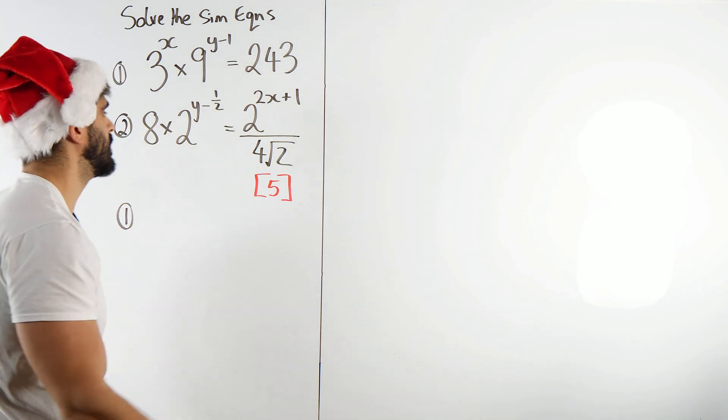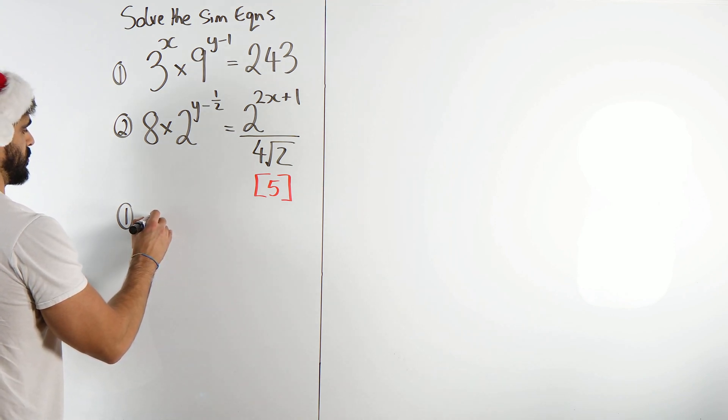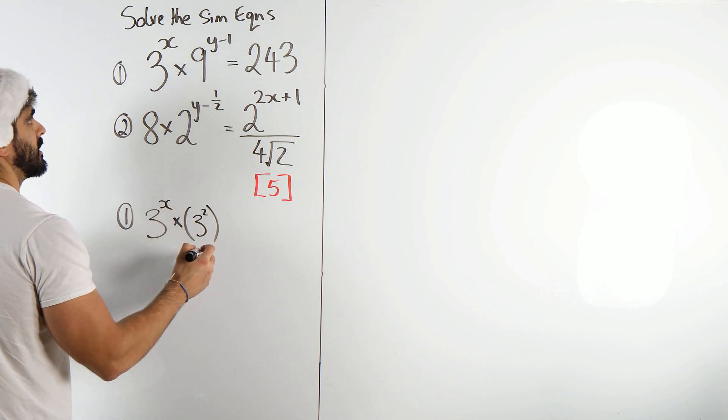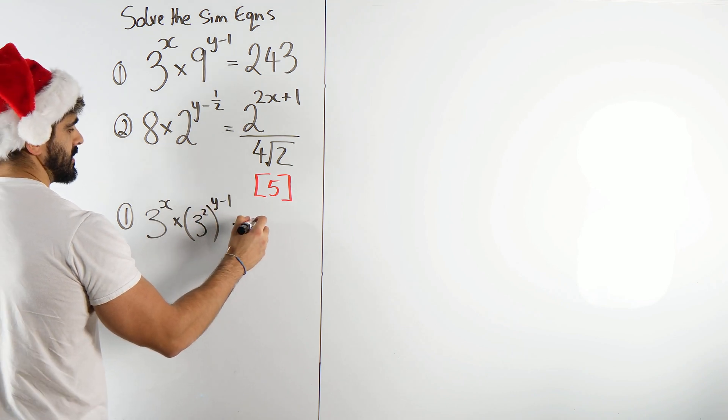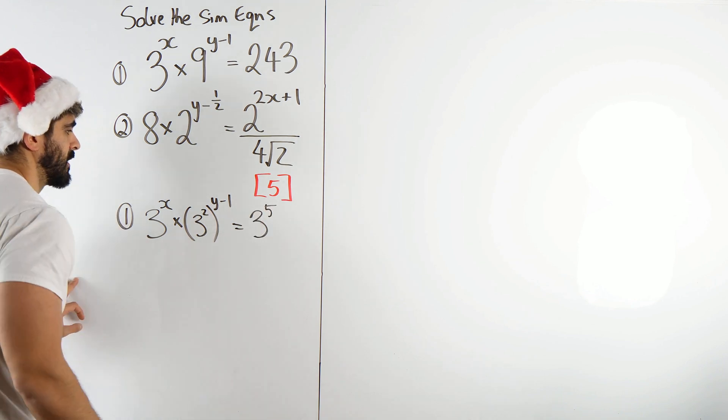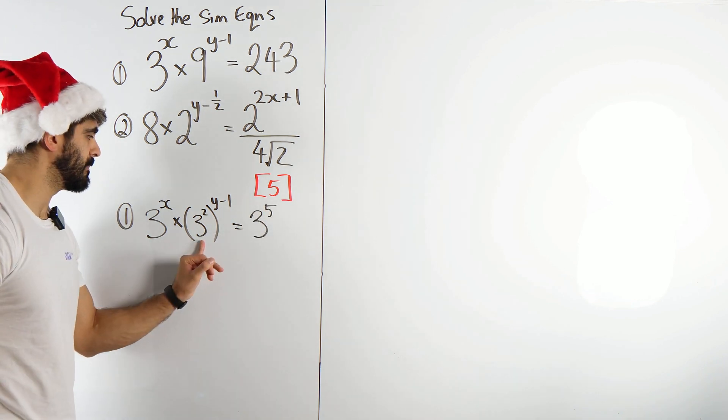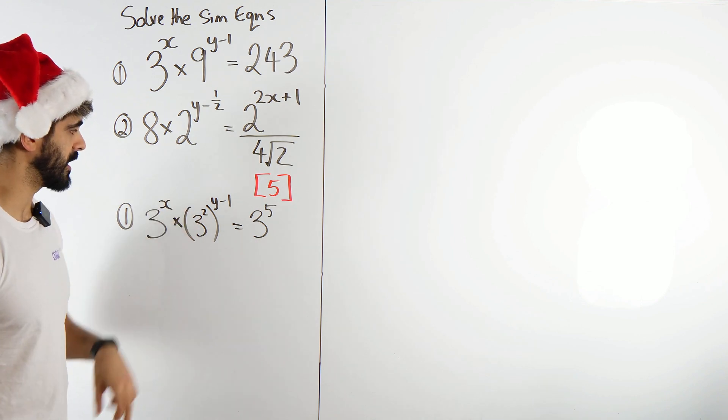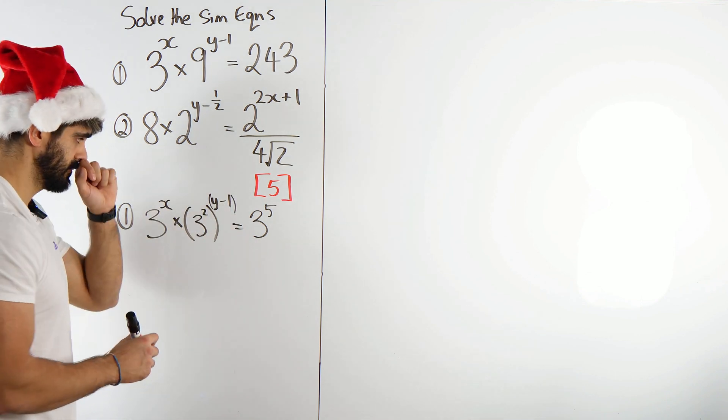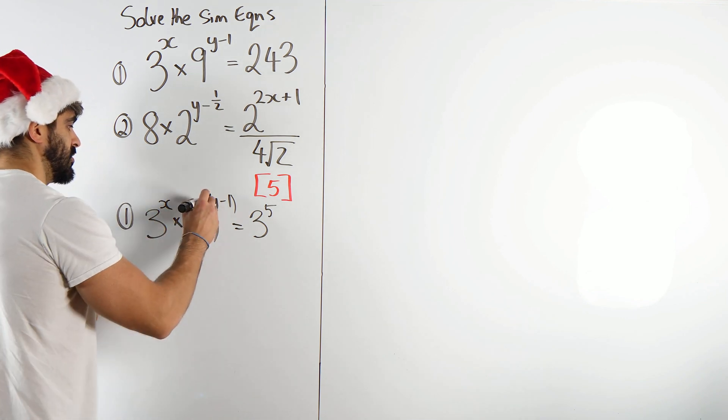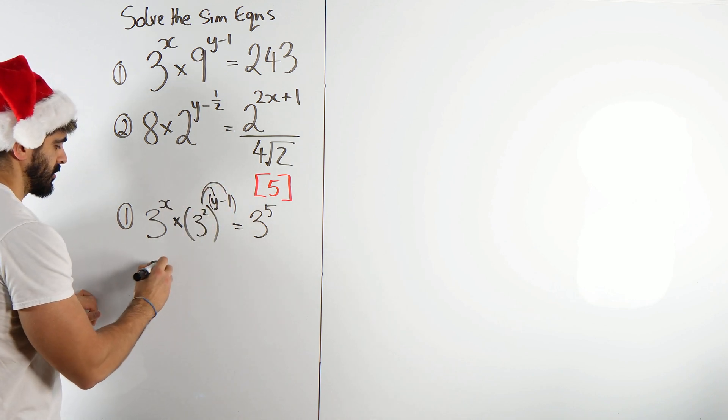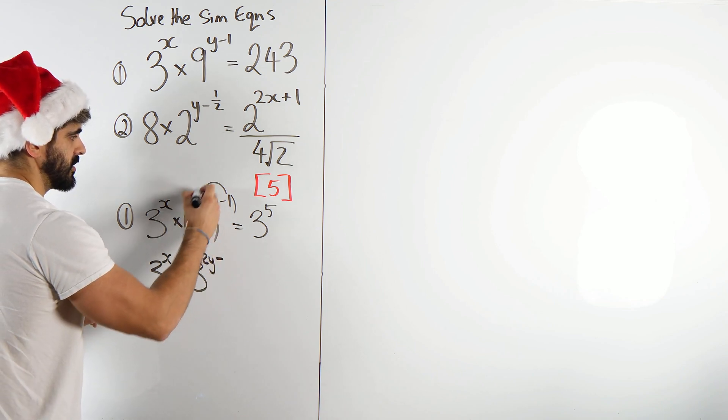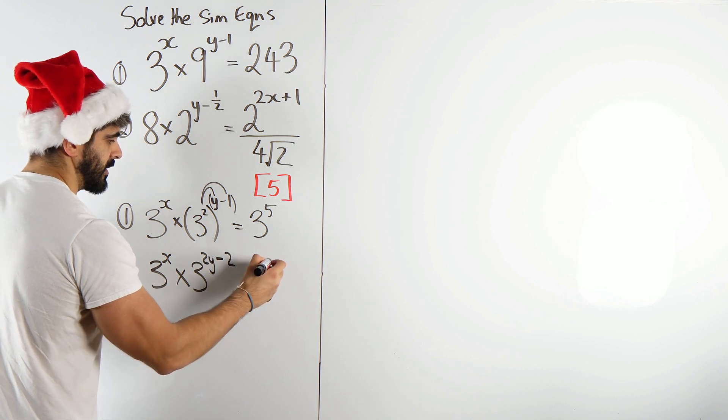And this is also a calculated paper as well if you guys wanted to experiment with your calculator. So 3 to the power of x times 9, which is 3 squared to the power of y minus 1, is 3 to the power of 5. Now what happens when you have a number raised to a power raised to another power? Well you just multiply the powers. You're doing two lots of y minus 1. Now here there's two terms. You have to be careful here. You just need to expand the bracket. So you've got 3 to the power of x times 3 to the power of 2y minus 2 is 3 to the power of 5.